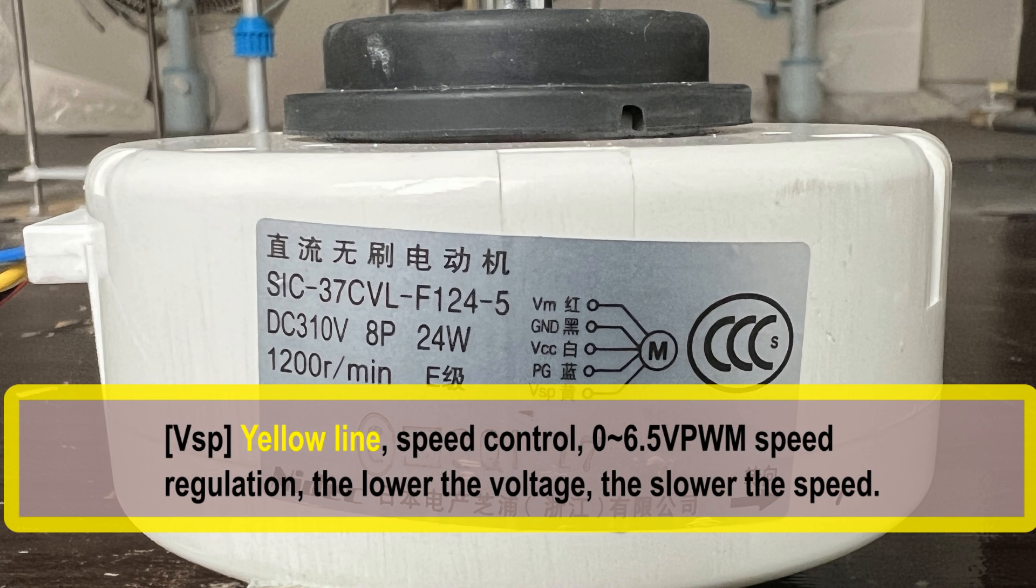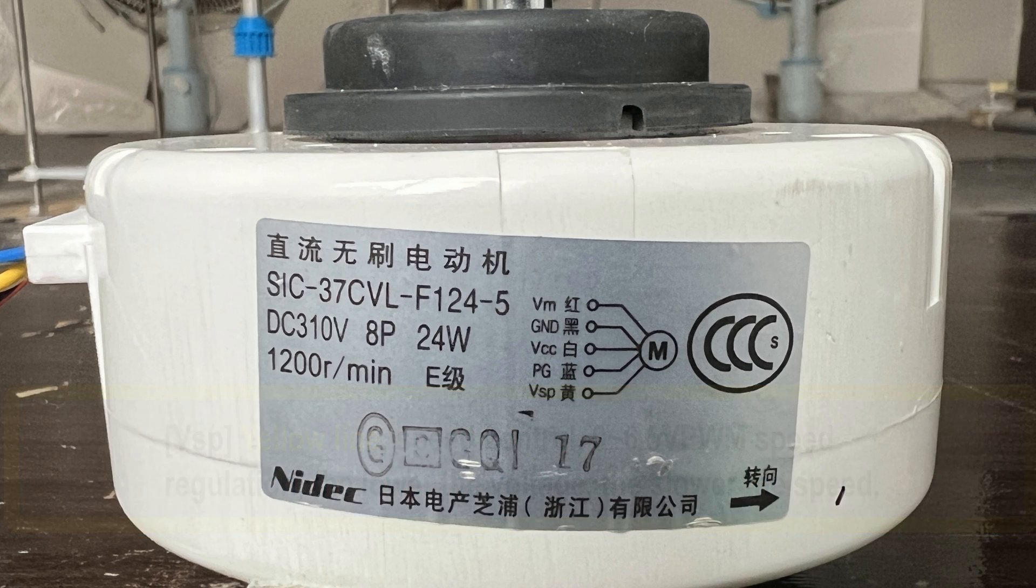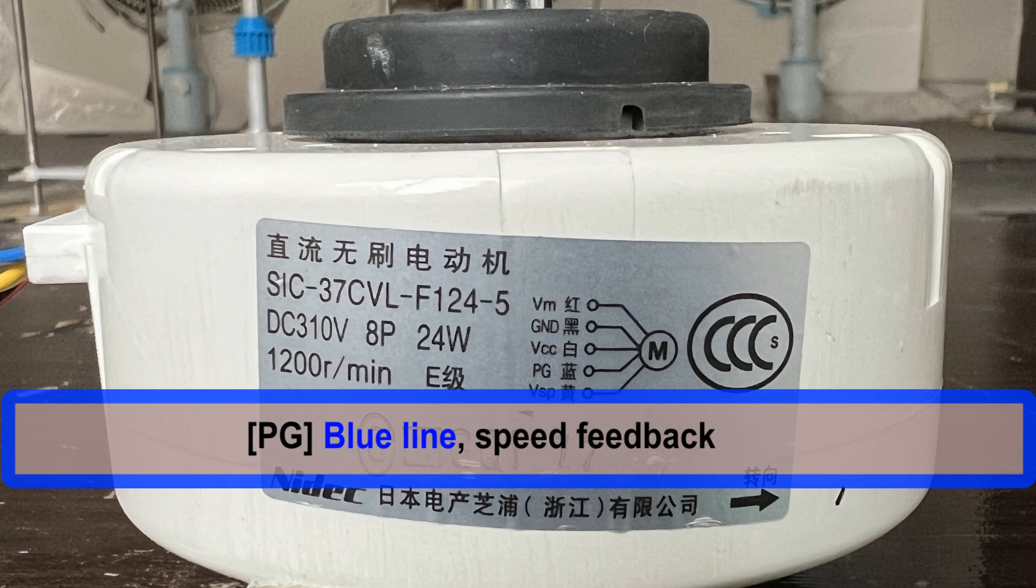The yellow line VSP is the speed command. 0 to 6 volts corresponds to motor speed. The higher the voltage, the faster the speed. Finally, there is a blue line PG, which is speed feedback. The specific signal is not explained.